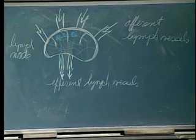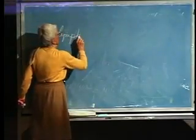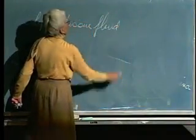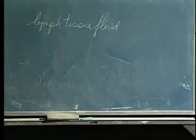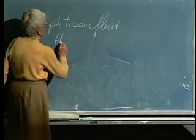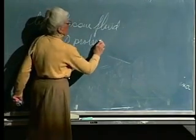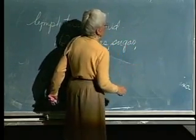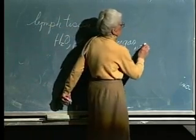Now, what is lymph? What do you think lymph is? Lymph is a tissue fluid. So it's mostly water, just like blood. Consists of water, proteins, sugars, and other things. And in some cases, fat.